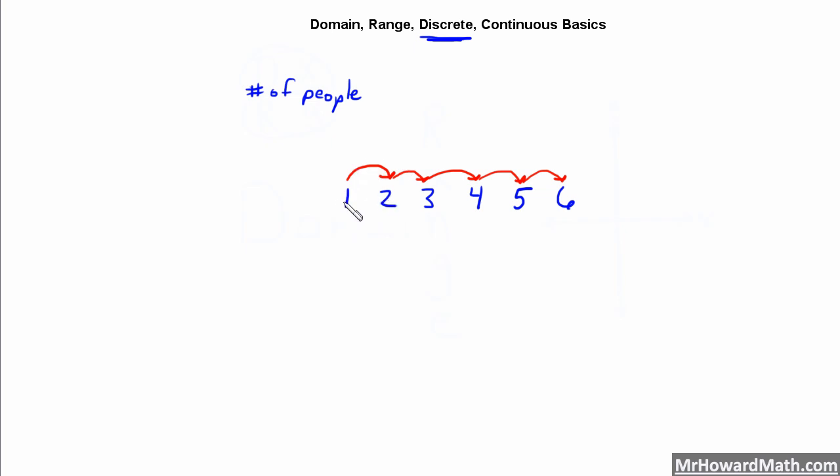We can't have half a person, so there's nothing in between 1 and 2. We immediately jump from 1 to 2, then from 2 to 3, then from 3 to 4 people, 4 to 5 people, 5 to 6 people. So number of people is an example of discrete.